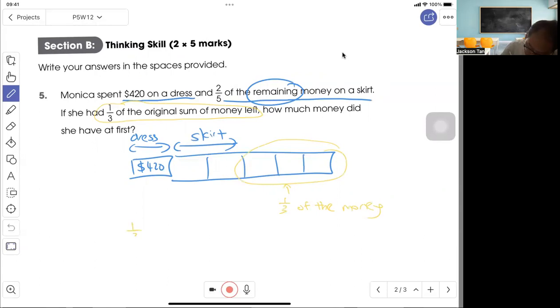Since one-third of the money appears to be three units, then the total three out of three of the money should be nine units. Here I have one, two, three, four, five. So here will be my four units then, total nine units.